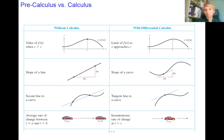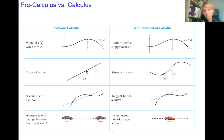Some things we can calculate without calculus, and others definitely require it. For example, the value of a function at point C we can find using algebra. But how the function behaves near point C requires the limit concept and calculus. Similarly, the slope of a secant line needs only algebra, while the slope of the tangent requires calculus.